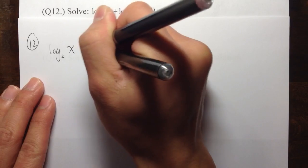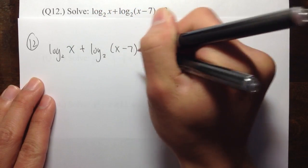Okay, question number 12. We are going to solve log base 2 of x plus log base 2 of x minus 7, this is equal to 3.